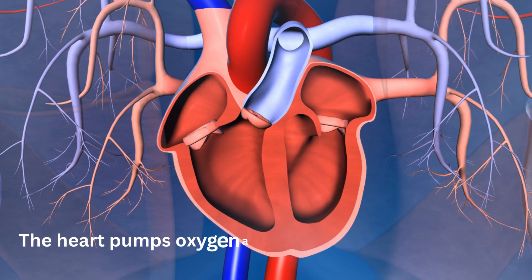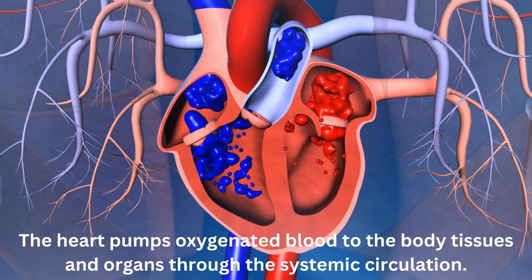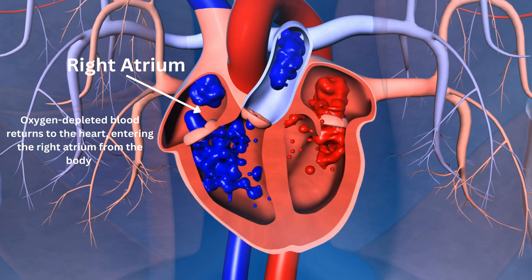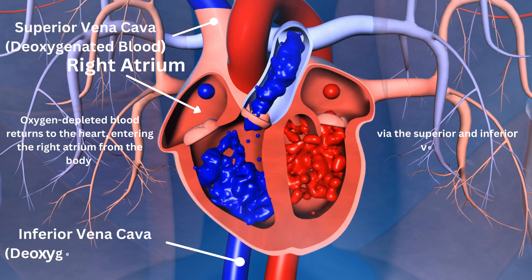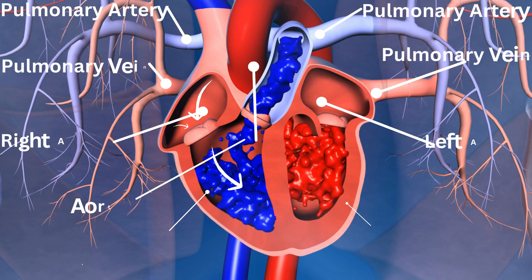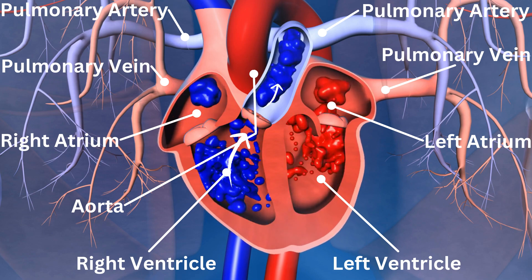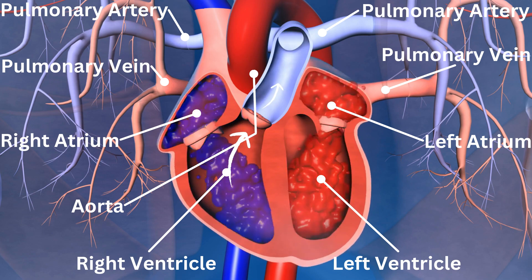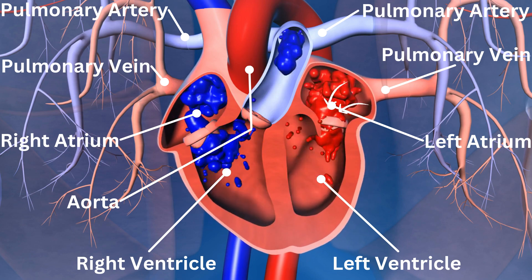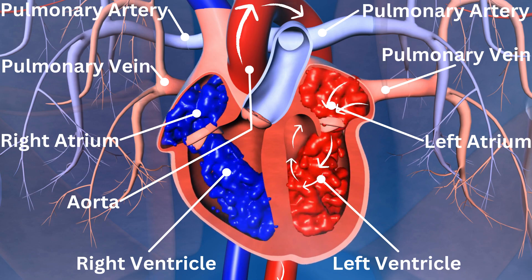The heart pumps oxygenated blood to the body tissues and organs through the systemic circulation. Oxygen-depleted blood returns to the heart, entering the right atrium from the body via the superior and inferior vena cava. The right atrium contracts, sending blood to the right ventricle, which then pumps the blood to the lungs through the pulmonary arteries for oxygenation. Oxygen-rich blood returns from the lungs to the left atrium through the pulmonary veins and is then pumped to the rest of the body by the left ventricle through the aorta.